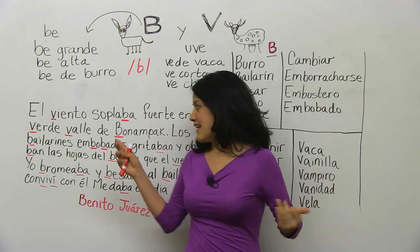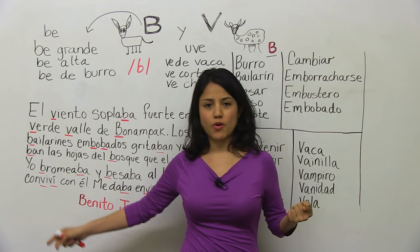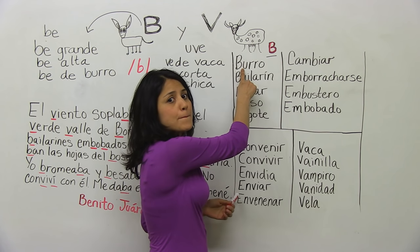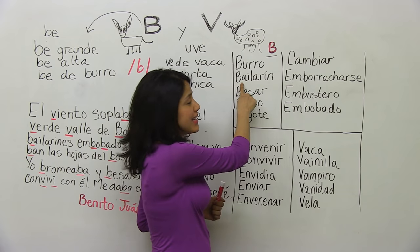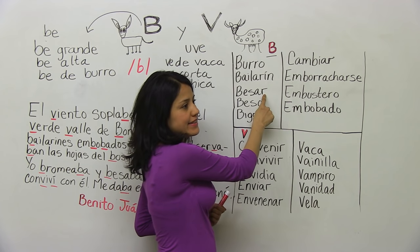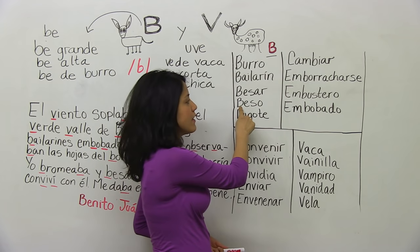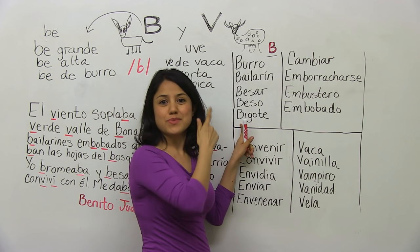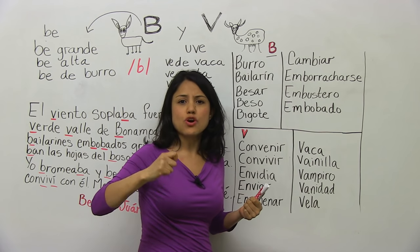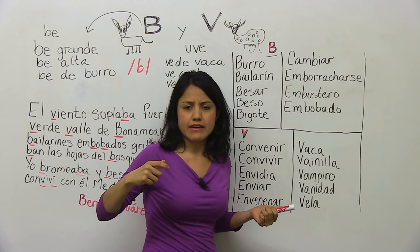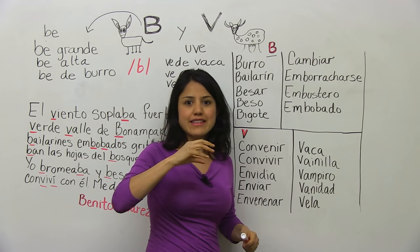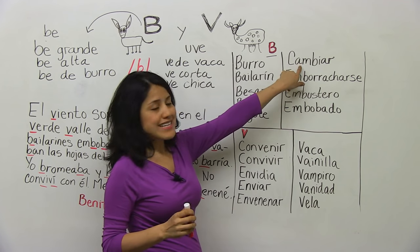We're going to review these words and then read my epic poem. For example: burro, bailarín — dancer — besar, to kiss, beso, a kiss, and bigote — mustache. I'm starting each word with a B, so the sound is stronger. Bigote, beso — you see my lips kind of close to say the word. It's strong.